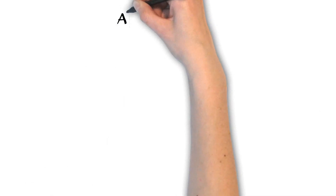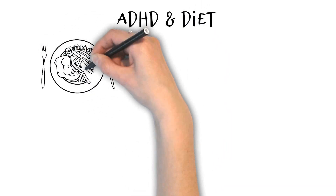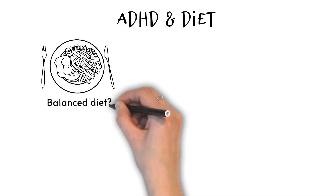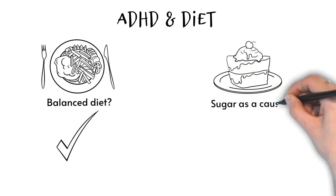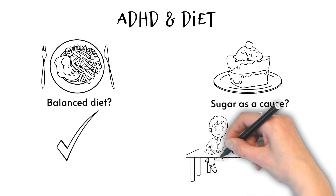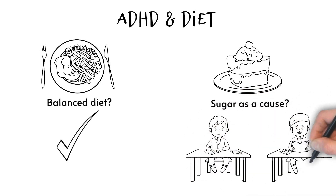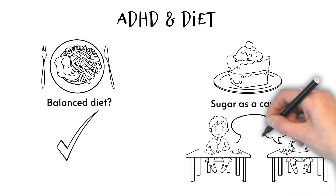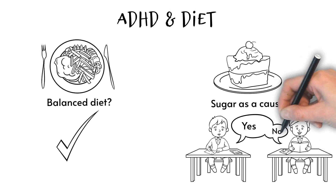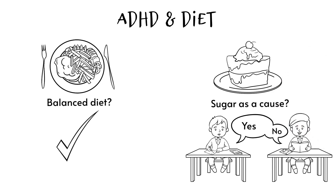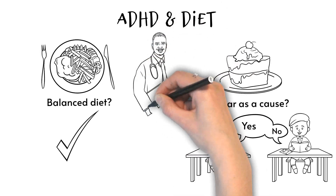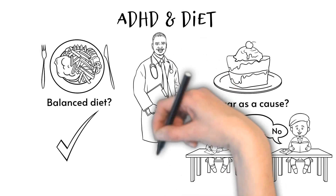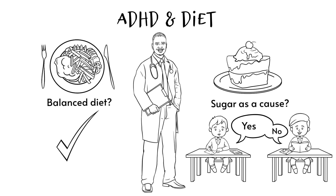You may also have heard that certain diets can be used as treatments for ADHD, or that excessive sugar can cause ADHD. A balanced diet is necessary to maintain good brain health and cognitive functioning. Currently, there is little clear evidence to suggest that sugar itself causes ADHD, and the evidence for treatments involving dietary changes is inconclusive. As causes of ADHD can vary for different children, certain dietary changes may help some but not others. That's why it's important to seek medical advice before making any dietary changes.